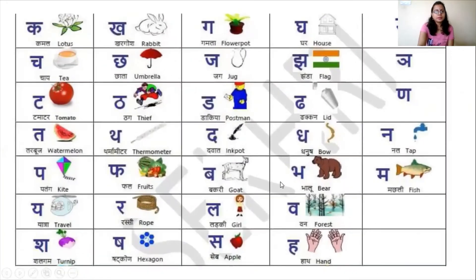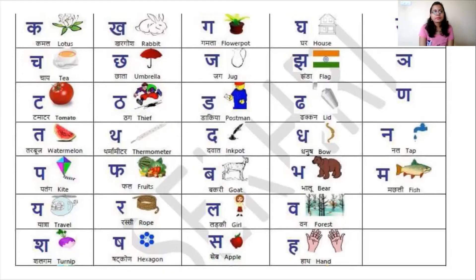We have completed the first, second, and third lines of consonants: ka, kha, ga, gha, unga, cha, chha, jha, jha, nya, ta, tha, dha, dha, na. In the fourth line we are doing letters where you have to touch your tongue. In the last class we completed those letters, and today we are going to do a new letter — na — in detail.